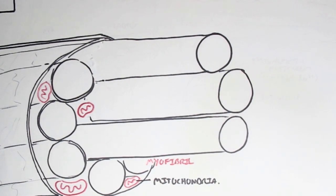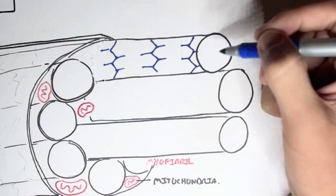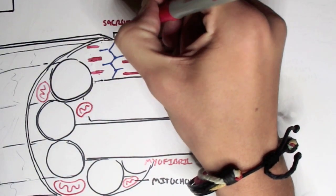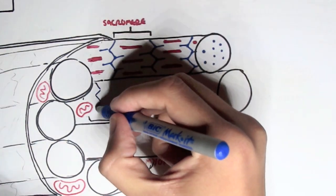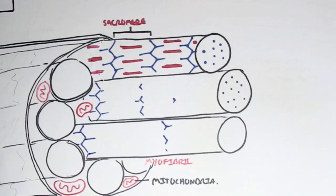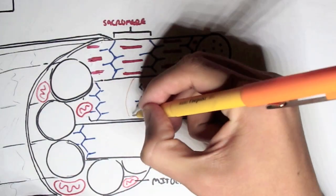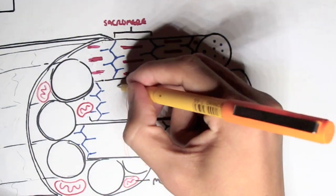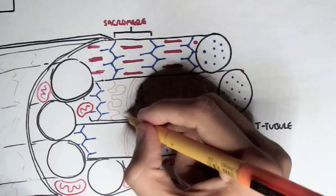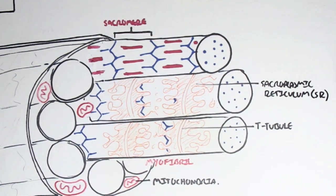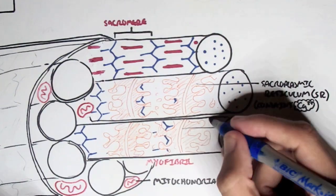Let's look specifically at the myofibrils. The myofibrils contain thin and thick filaments — here in blue are the thin filaments and in red the thick filaments. From one Z-line to another Z-line of the thin filaments is what we call a sarcomere, and we have this within each myofibril. Within each myofibril we also have what's called the T-tubule, which runs around the myofibril. Surrounding it we have what's called the sarcoplasmic reticulum, abbreviated SR, and this sarcoplasmic reticulum contains calcium ions.